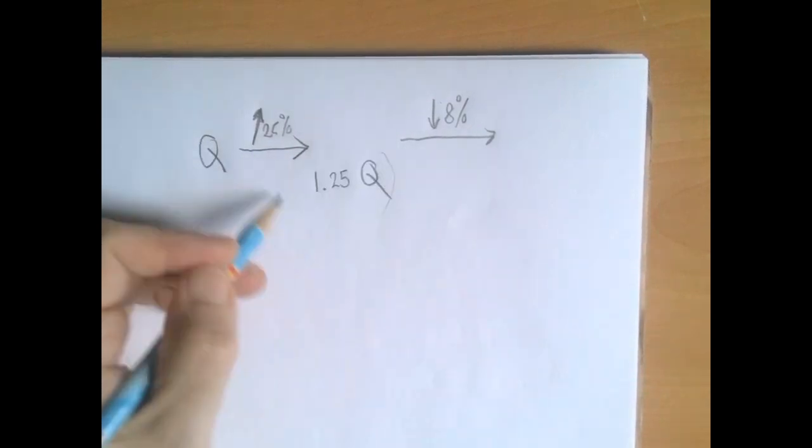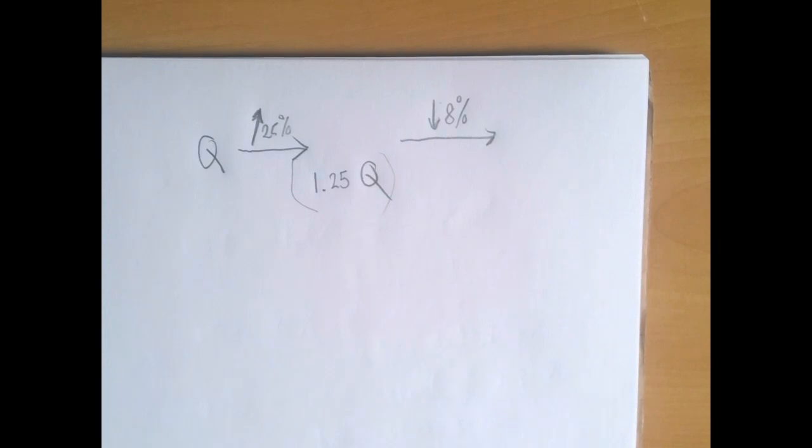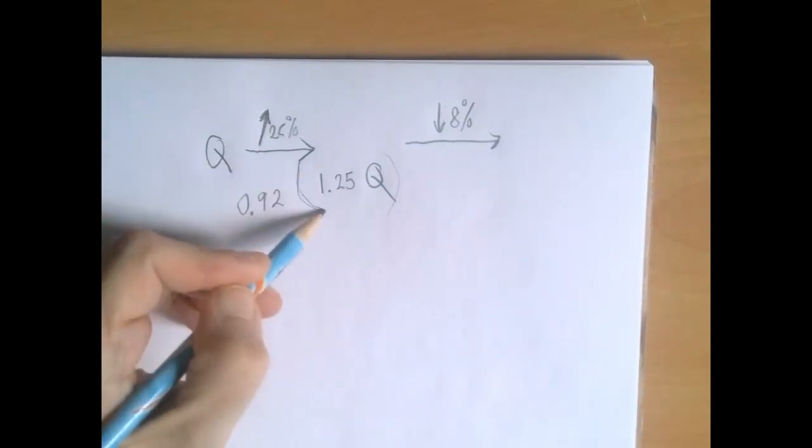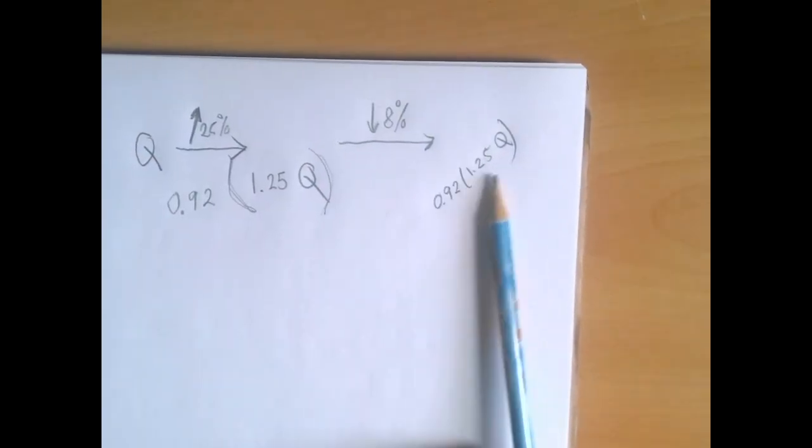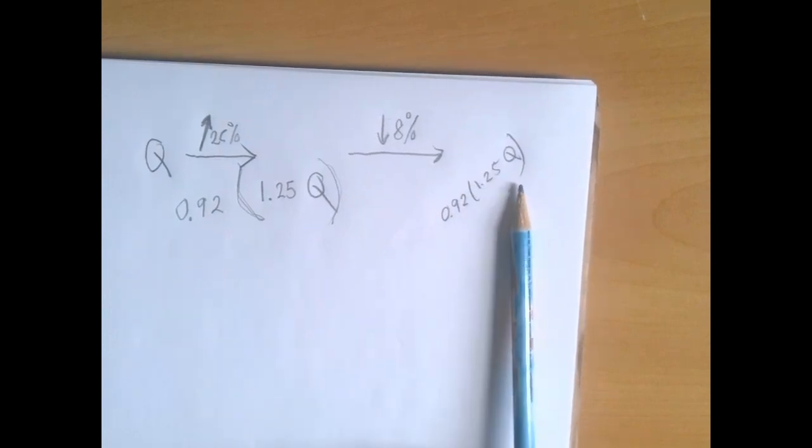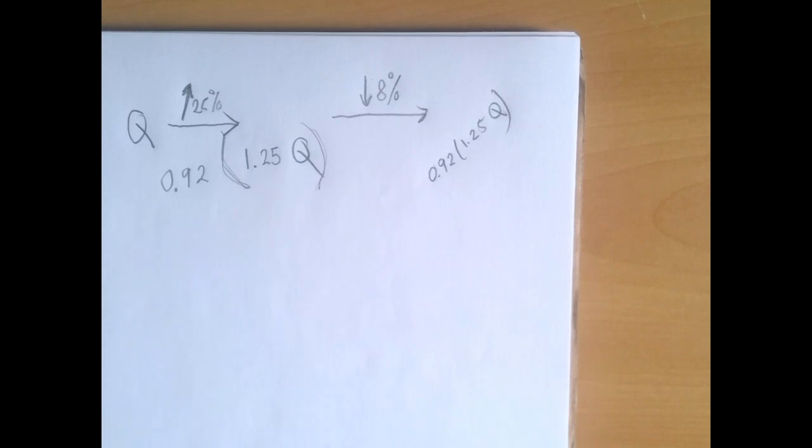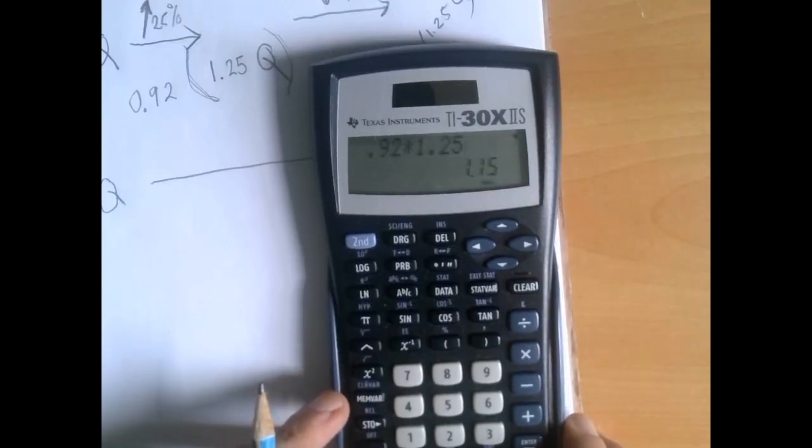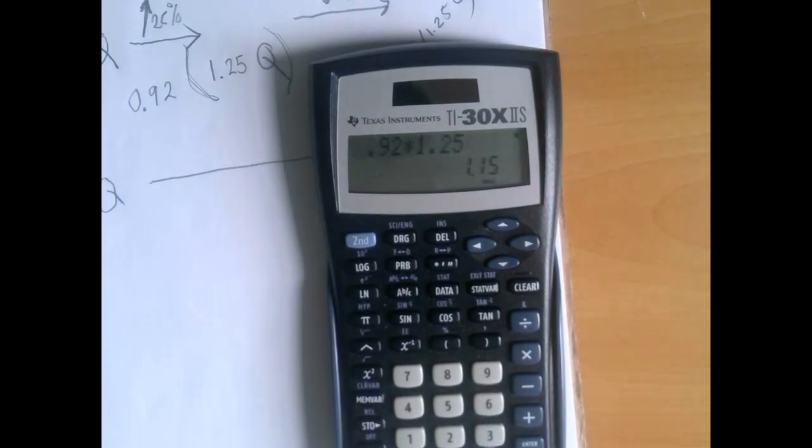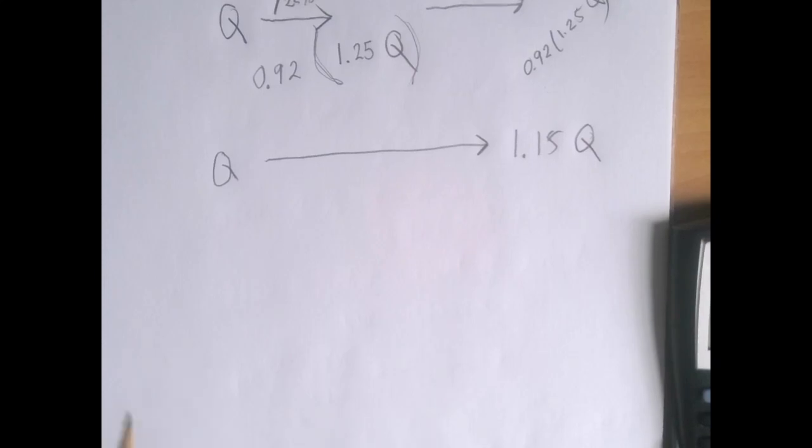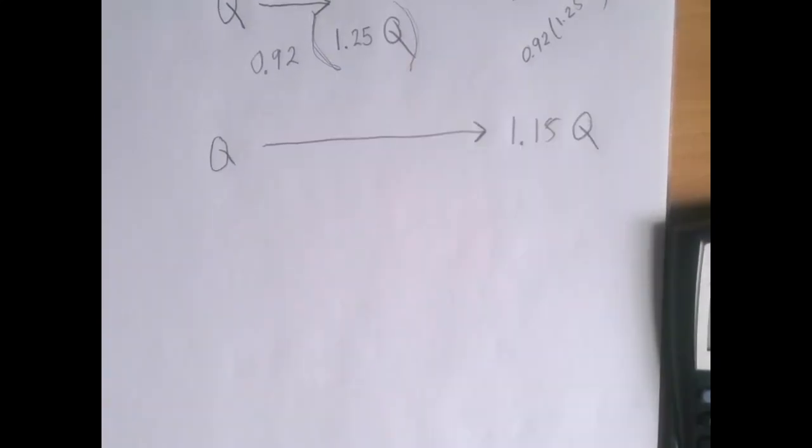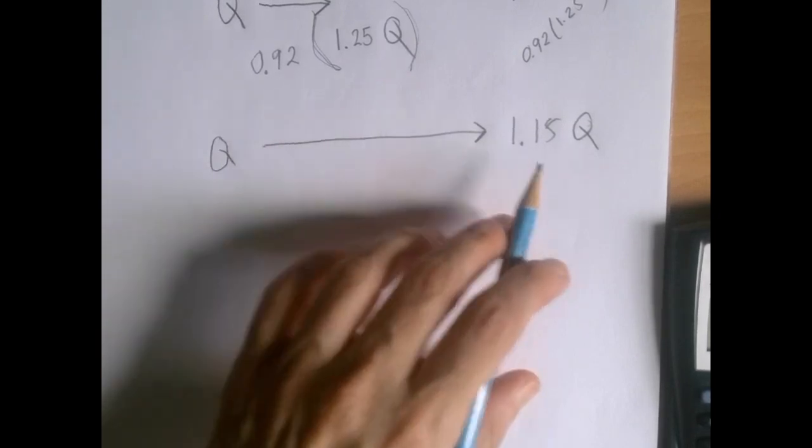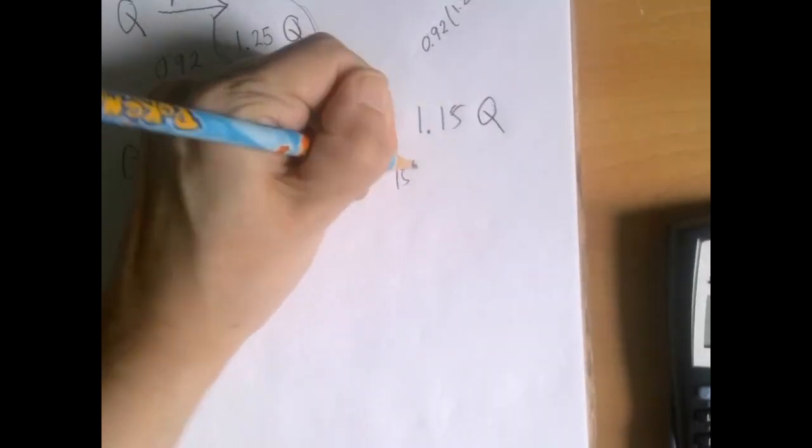And then, this number was then decreased by 8%. Well, what was the quickest way to decrease by 8%? By computing 92% of that. So, multiply. So, the original quantity was Q. After 25% increase, it's 1.25Q. And then, we decrease that by 8%. So, we punch this in. So, 0.92 times 1.25 is the same as 1.15. So, the two increases took Q, took this quantity from Q to 1.15Q. But, that means, that means it's a 15% increase.